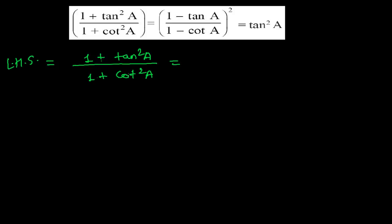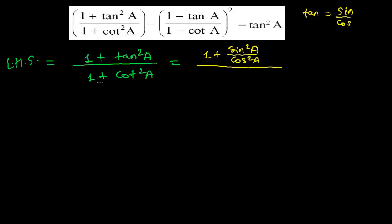We need to convert tan and cot into sin and cos form. So it will be 1 plus — tan is sin upon cos — so in the place of tan square a I can write sin square a divided by cos square a. And then, divided by 1 plus — cot a is equal to cos a divided by sin a — so in the place of cot square a I can write cos square a divided by sin square a.